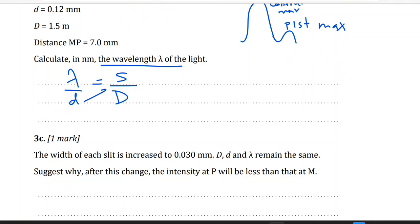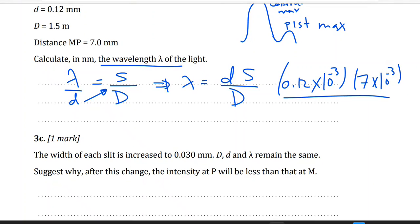Now I need lambda, so do cross multiplication. Lambda will be small d times s divided by capital D. d is 0.12 millimeter, which is 0.12 times 10 to the power negative 3, times s, which is 7 millimeter, 7 times 10 to the power negative 3, divided by 1.5. And this equals 560 nanometer.